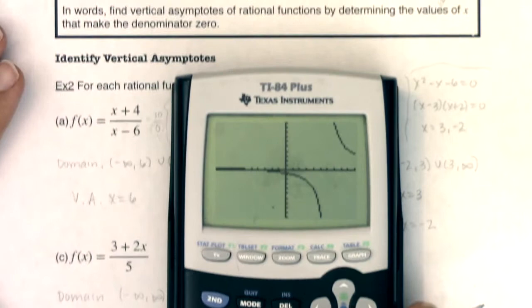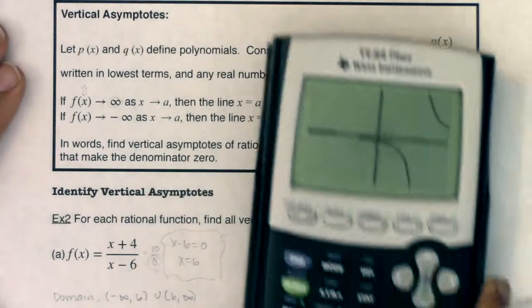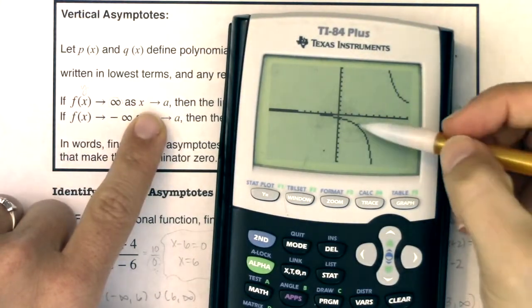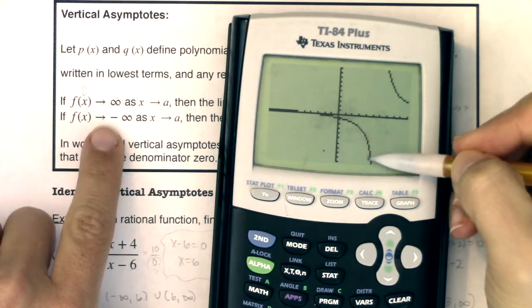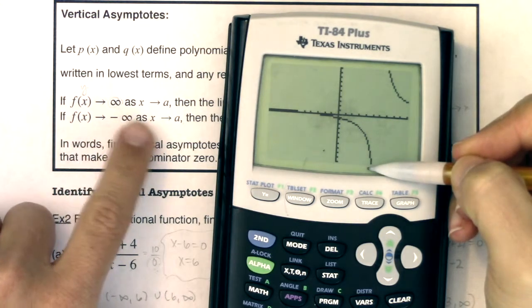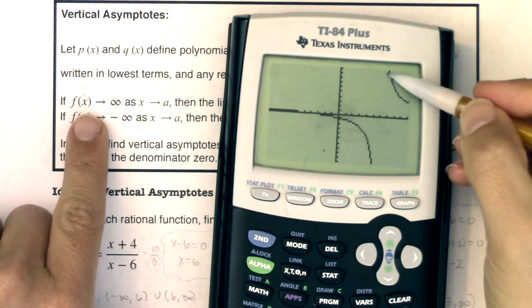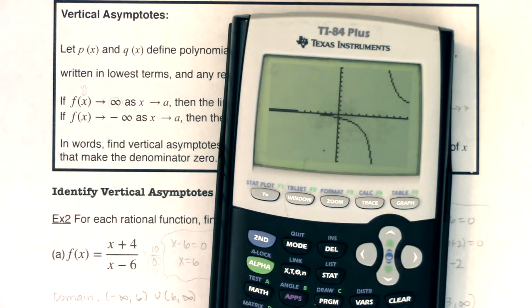All right, we're saying as x goes to 6, what happened to my y values? Well, on this side of 6, my y values went to negative infinity. I headed down. On the right side of 6, as I head towards 6, my y values are headed up to positive infinity. So it is fitting that definition of vertical asymptotes.